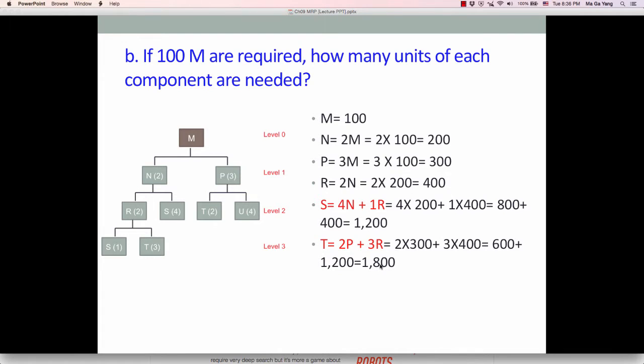Final item U equals 4P, 4 times 300 equals 1200. So if we know the number of end item M, we can calculate those components and assemblies. This is the independent demand item. This is the dependent demand item.